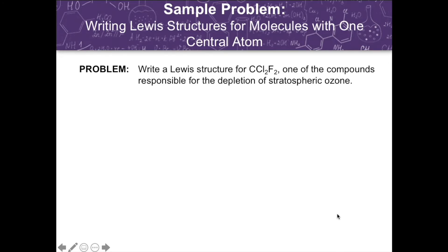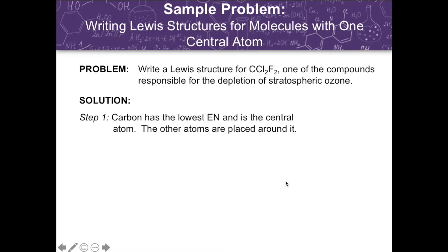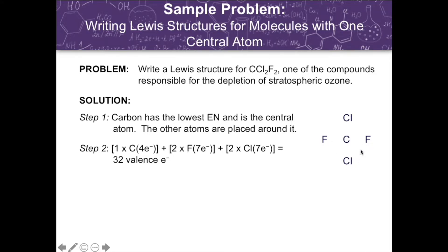For our next example, we have to write a Lewis structure for CCl₂F₂, one of the compounds responsible for the depletion of stratospheric ozone. Since carbon has the lowest electronegativity value, it is the central atom, and the other atoms are placed around it. There is no specific position for the surrounding halogen atoms. Looking at the total number of valence electrons, adding all of them up gives us 32 valence electrons.